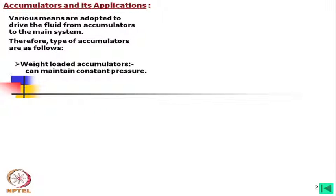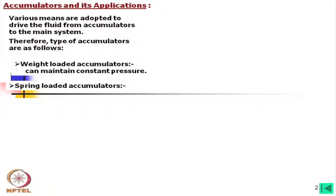Weight-loaded accumulators have the unique advantage that they can maintain constant pressure. Spring-loaded accumulators have a limitation: the force reduces when the compressive spring expands, so there will be a change in pressure — a variation of pressure.